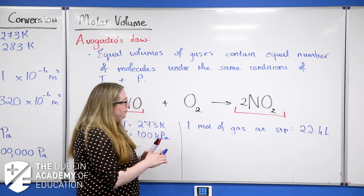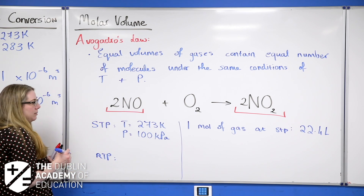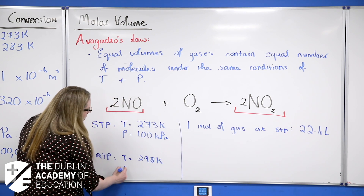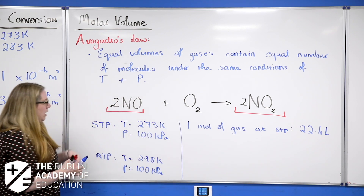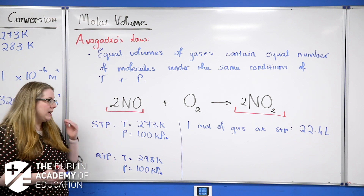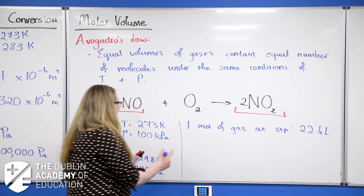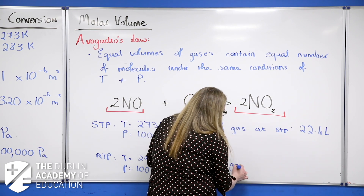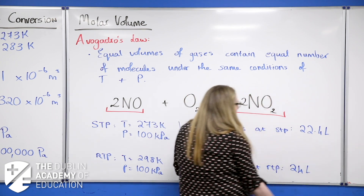Now let's talk about RTP — room temperature and pressure. The temperature is 298 K and the pressure is 100 kPa. The only difference between STP and RTP is the temperature is higher; if the temperature is bigger, the volume is going to be bigger. One mole of any gas at RTP, regardless of what it is, will occupy 24 litres of space.